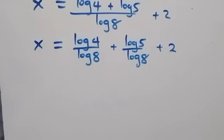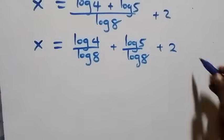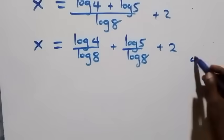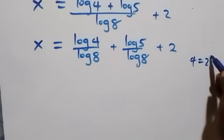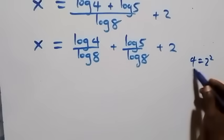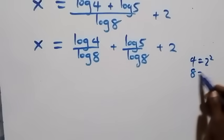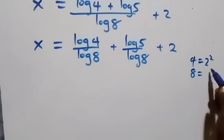The next step, we can write 4 as 2 times 2, which is 2 squared, and also 8 as 2 times 2 times 2, which is 2 cubed.